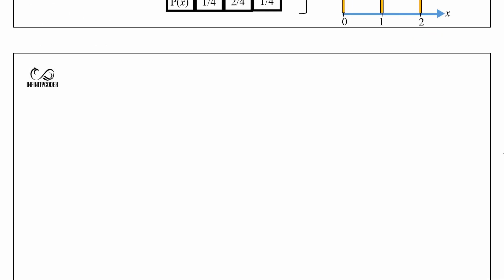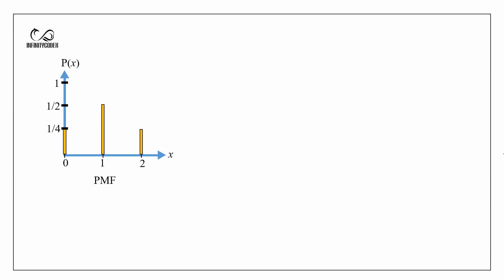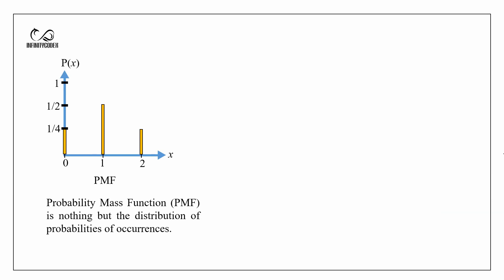This graphical representation is called the PMF, that is probability mass function. The definition of probability mass function is the distribution of probabilities of occurrence.